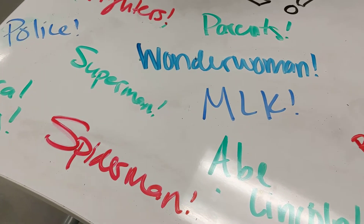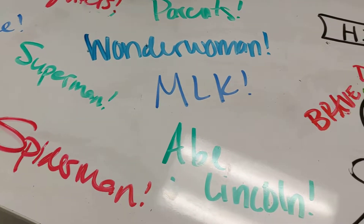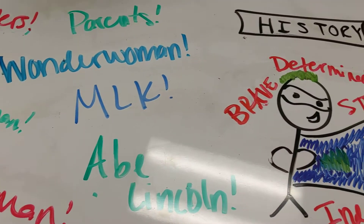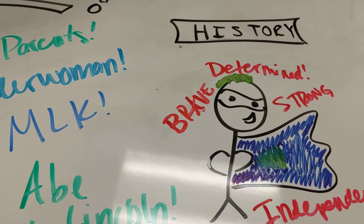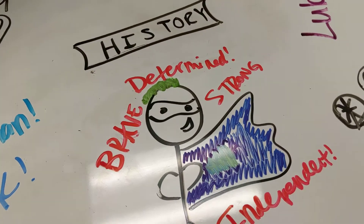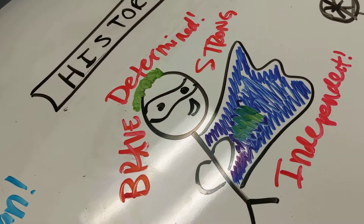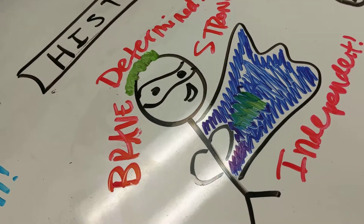Inevitably, we talk in-depth about who is the best Avenger. We bring up historic heroes, such as Martin Luther King Jr. or Joan of Arc, and by the end of class, we come up with an agreed-upon definition of what a hero truly is.